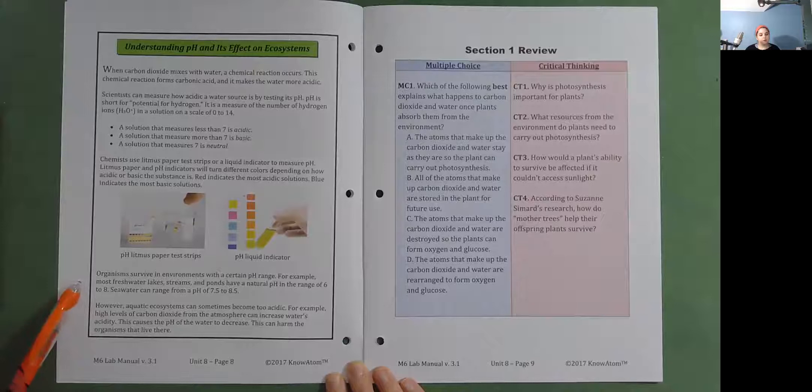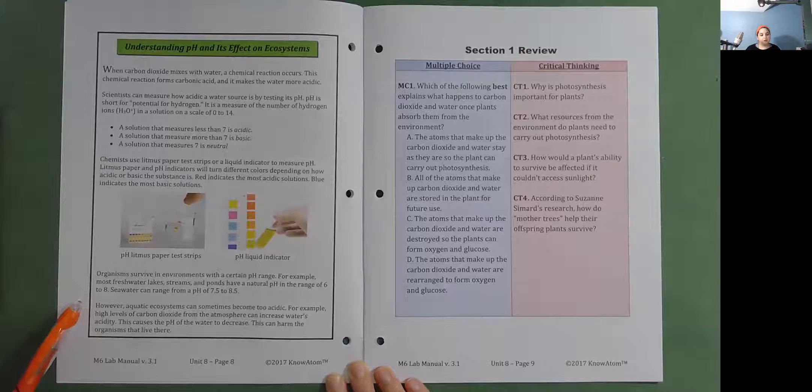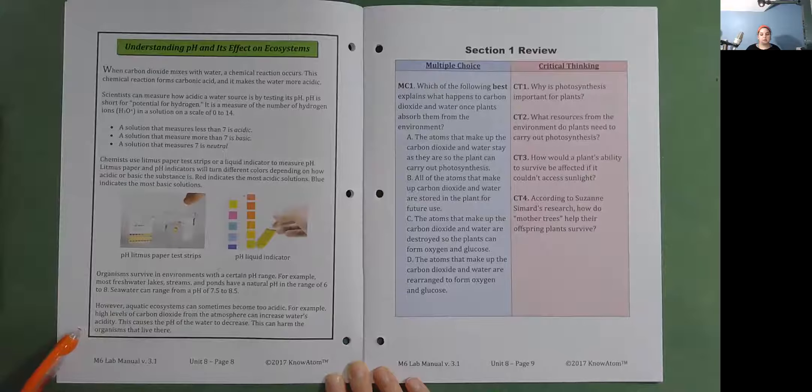Organisms survive in environments with a certain pH range. For example, most freshwater lakes, streams, and ponds have a natural pH in the range of 6 to 8. Seawater can range from a pH of 7.5 to 8.5. However, aquatic ecosystems can sometimes become too acidic. For example, high levels of carbon dioxide from the atmosphere can increase water's acidity. This causes the pH of the water to decrease. This can harm the organisms that live there.